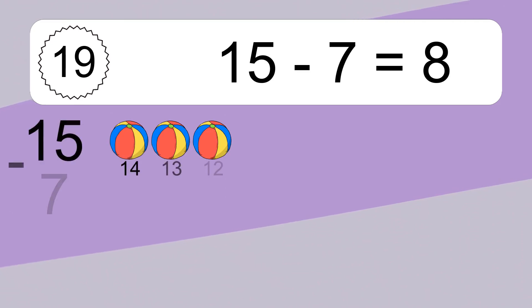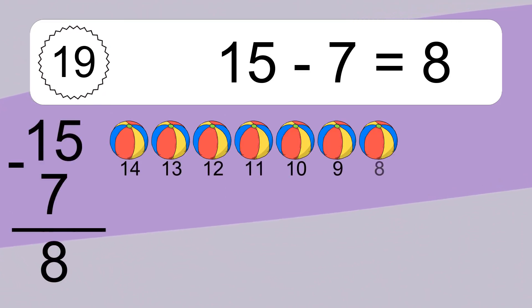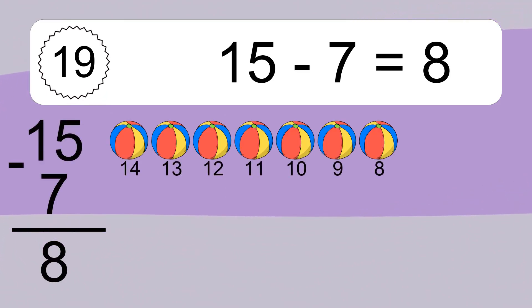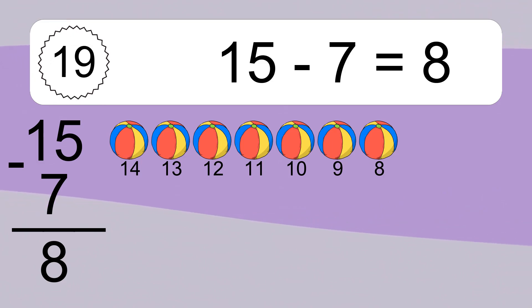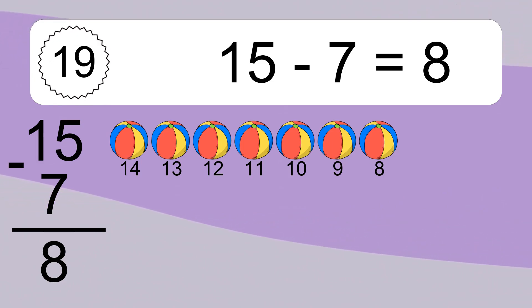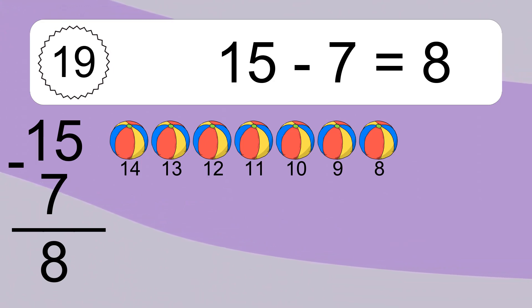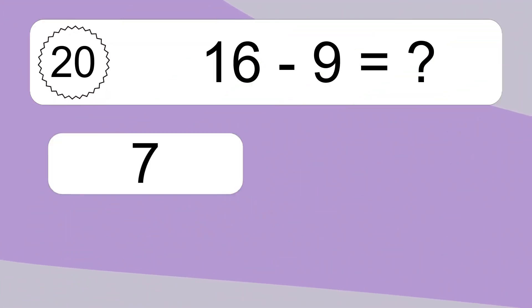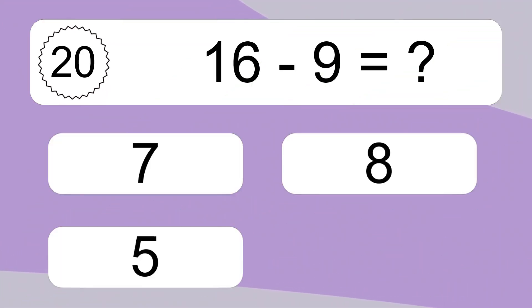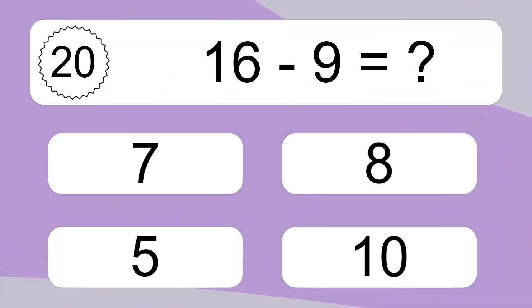15 minus 7 equals what? 15 minus 7 equals 8. Let's count it: 14, 13, 12, 11, 10, 9, 8.